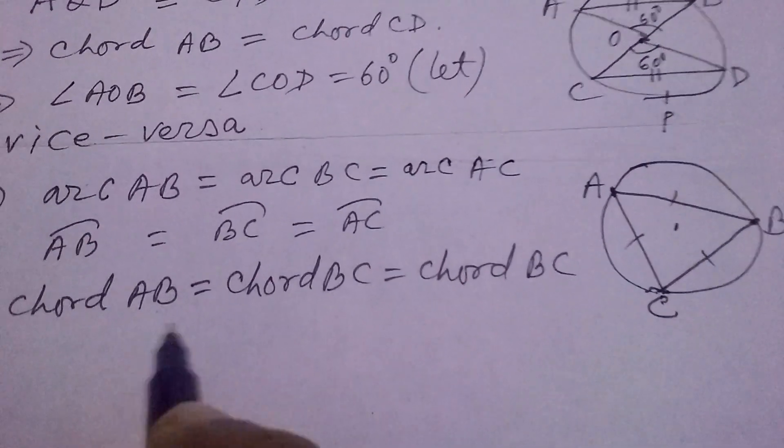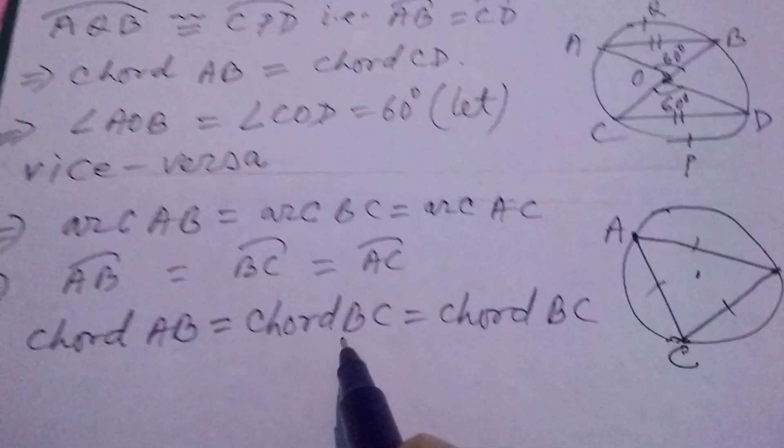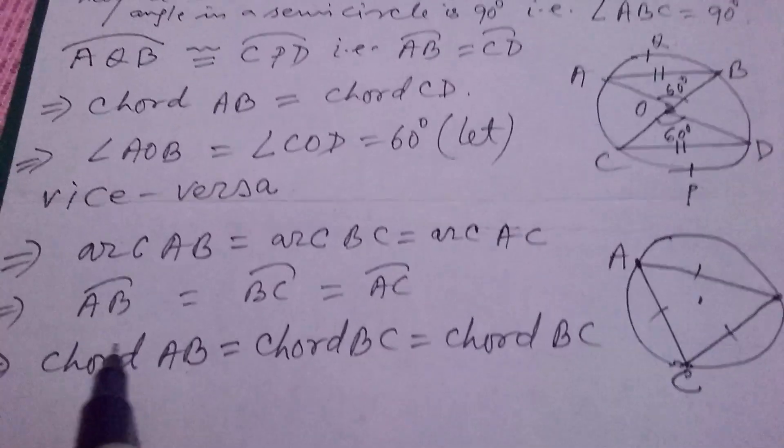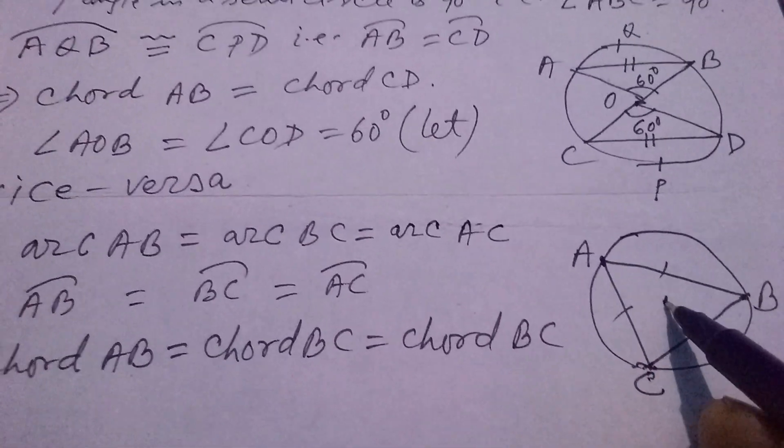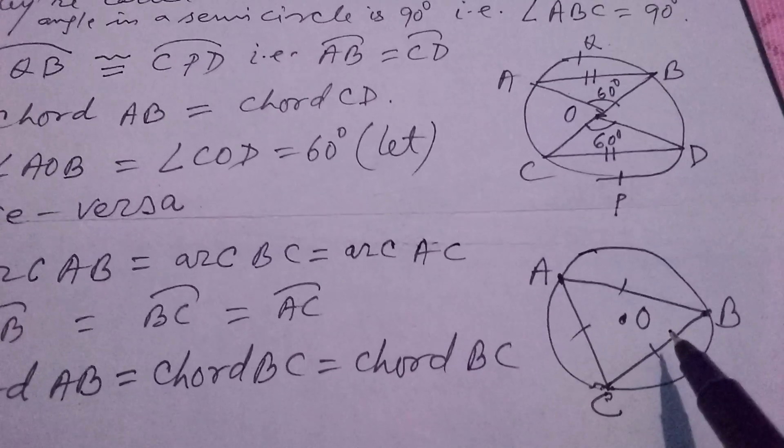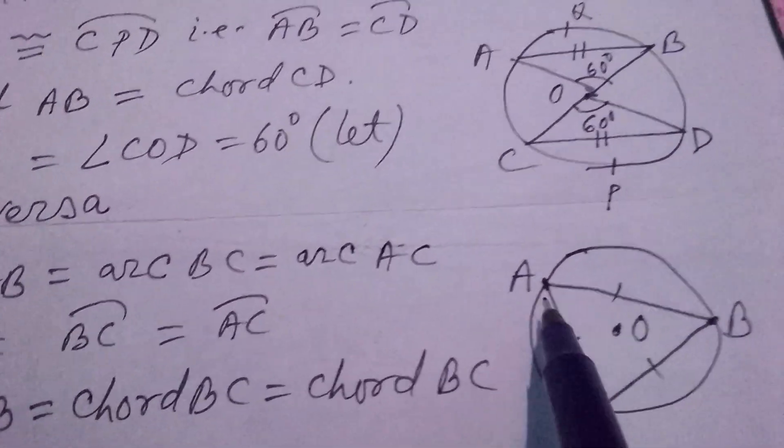And just now I explained that, equal chords make equal angles at the center. Equal arcs make equal angles at the center. And that's why, the angle, that means, center is O. So at the center, they will make equal angles.